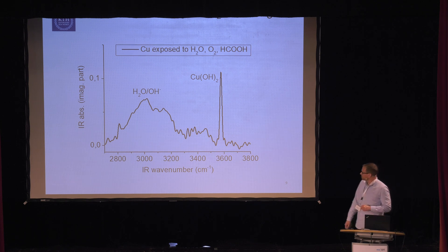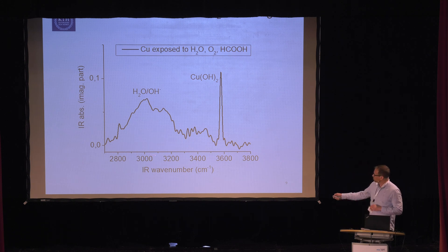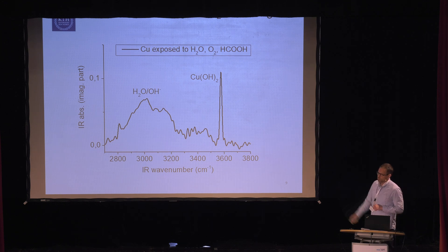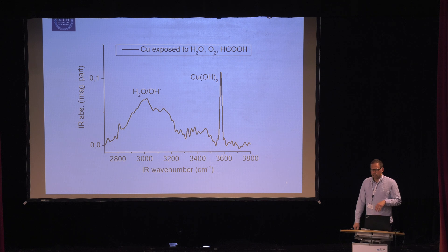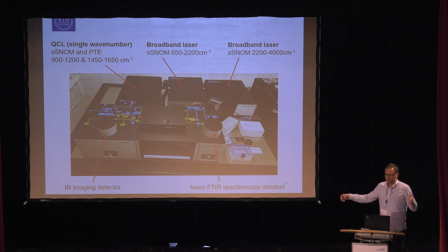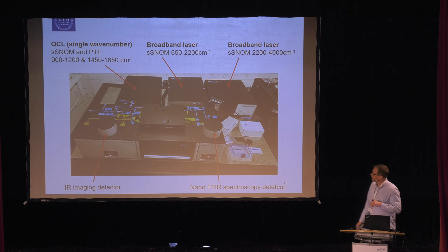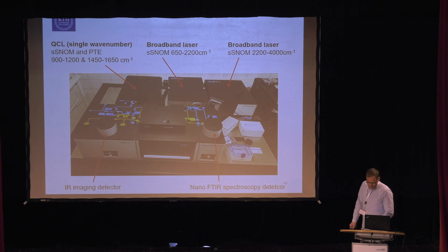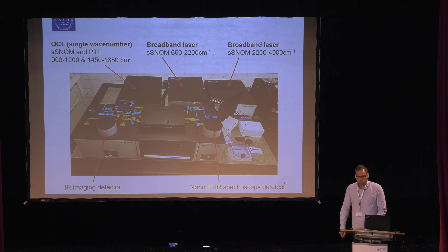I'm also really excited about this: in the system we just bought, we also got a laser that covers the region from around 2200 up to 3800 wavenumbers, which gives us new possibilities. Now we can actually probe water and hydroxides, which are commonly embedded in corrosion products, and at 3570 wavenumbers we can also probe copper hydroxide. This means we can now probe essentially the same region as a normal FTIR spectrometer with an MCT detector — from around 650 up to 4000 wavenumbers — using QCL lasers for SNOM and photothermal expansion measurements. And we have a highly motivated student, VG Saw, who is going to use this system to study the corrosion of copper during his PhD.